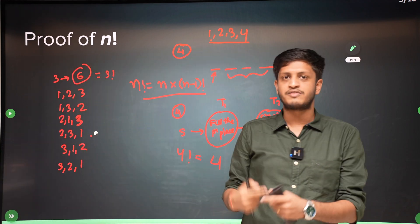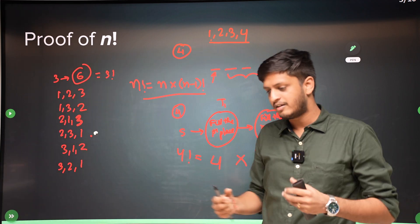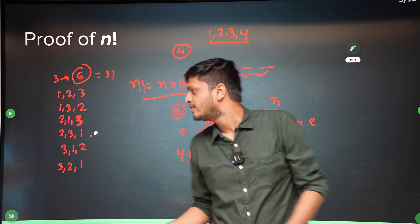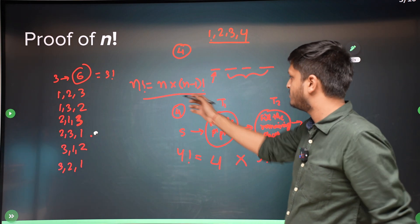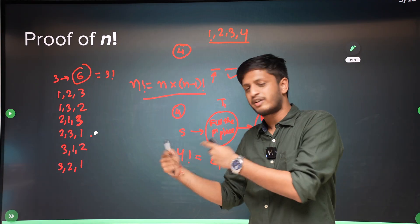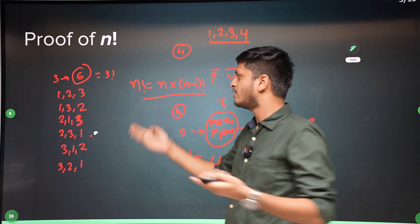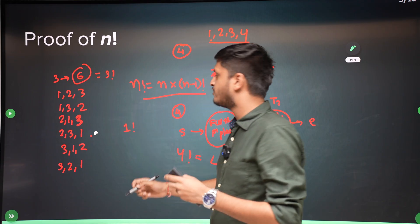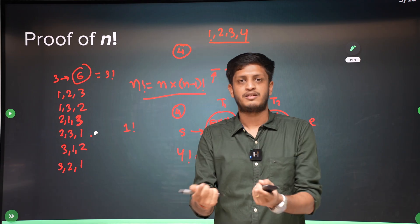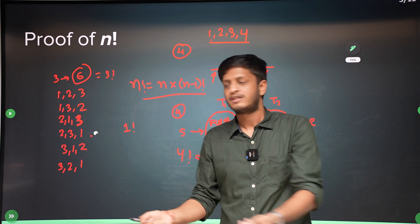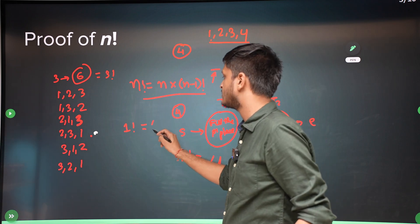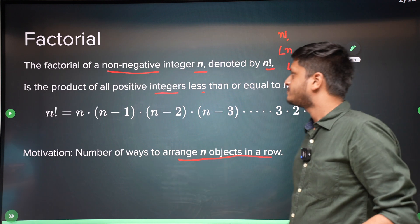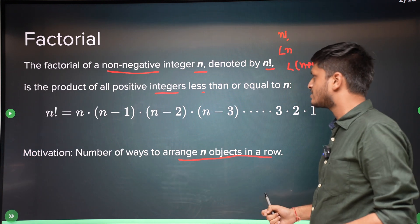When talking about recursions we have a base case. For n = 1: the number of ways to arrange one object in a row is 1, so 1 factorial = 1. This is the base case, and from here you can compute any number's factorial.